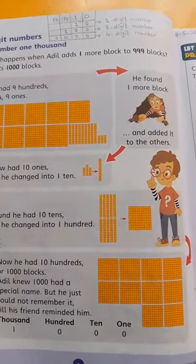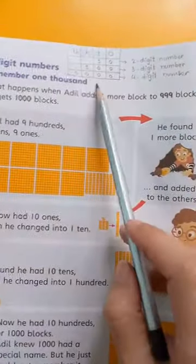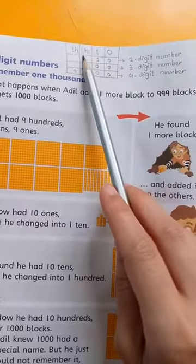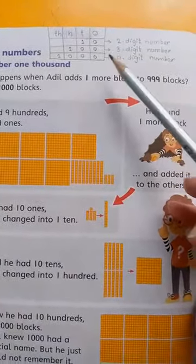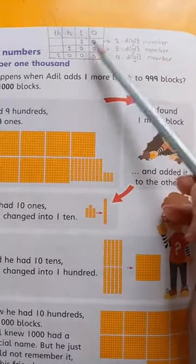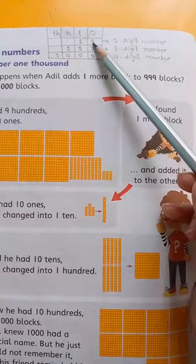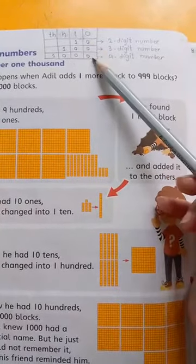Our topic is place values. So students, this is your chart like ones, tens, hundreds and thousands. Ab is mein hota kya hai? For example, ek number hai ten. To ones ke block mein zero aega and tens ke block mein one aega. Ye aap padh chukke hai.